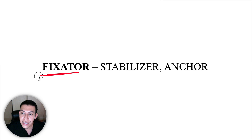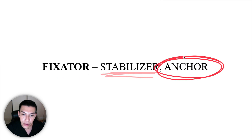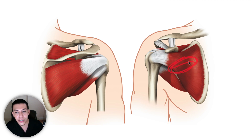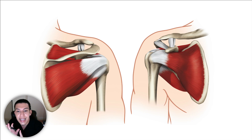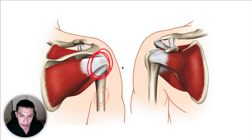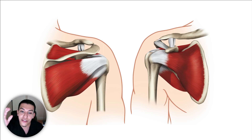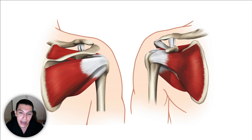Fixators are also known as stabilizers — I like to think of the word anchor, as they anchor a joint. The muscles I like to use to explain this are the rotator cuff muscles: the supraspinatus, infraspinatus, teres minor, and the subscapularis underneath the scapula. These four rotator cuff muscles originate on the scapula and insert on the head of the humerus. They hold and anchor the head of the humerus into the glenoid cavity on the scapula, stabilizing that joint.